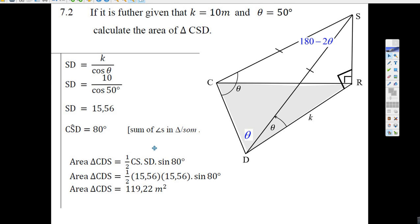You know, when they say area, get really comfortable with the area rule: one half A times B times sine of C, the angle that's in between them.